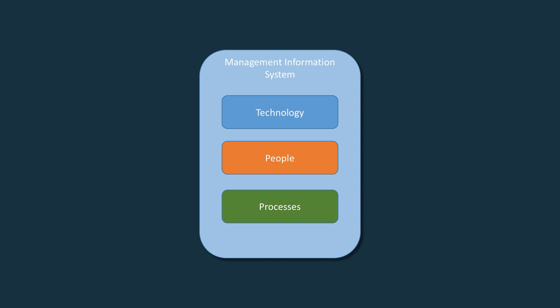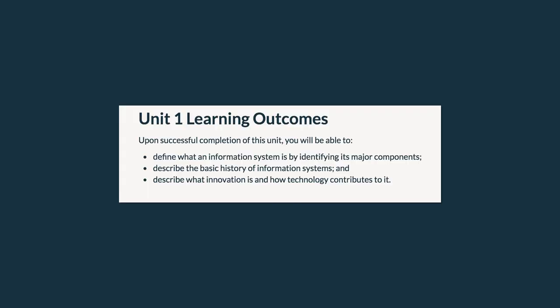You will spend time learning about the details of each of these components as you move through the course. Key concepts to watch out for in the first unit include the definition of the major components of a management information system, the basic history of information systems, and what innovation is and how technology contributes to it.